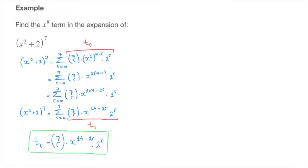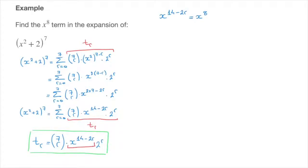Now, the key thing to realize is that in the expansion of x squared plus 2 raised to the power of 7, the x to the power of 8 term corresponds to the general term when x to the power of 14 minus 2r equals x to the power of 8. So to find the x to the power of 8 term, all we need to do is figure out when x to the power of 14 minus 2r equals x to the power of 8. Since both sides are written as powers of the same base x, we can solve this by equating the exponents.